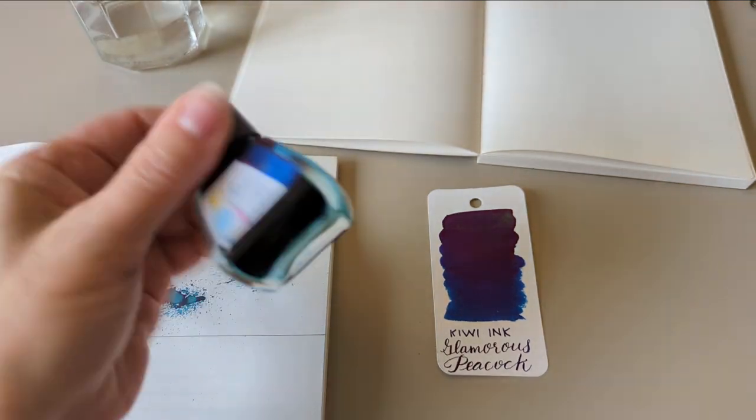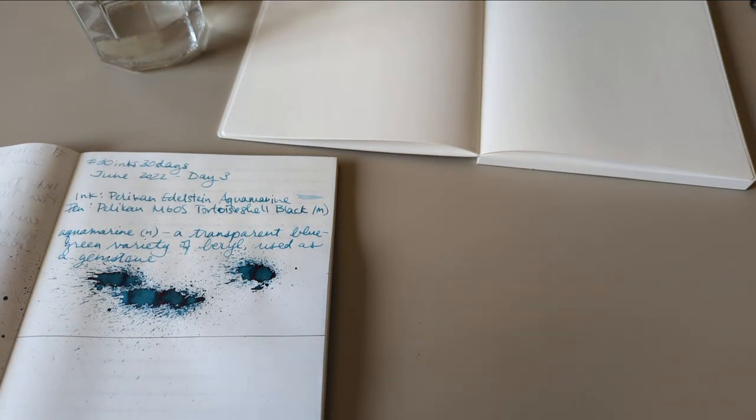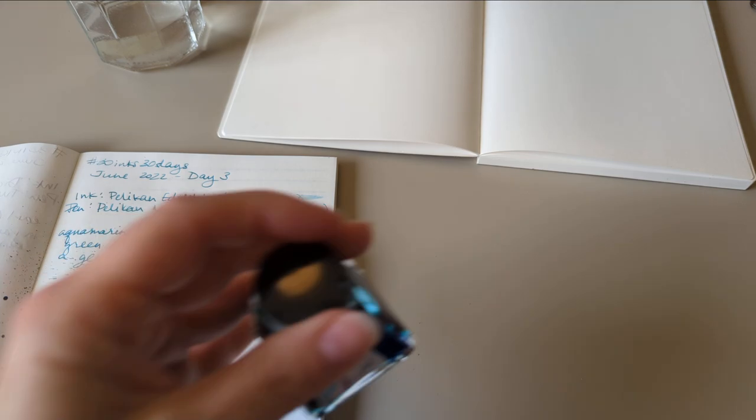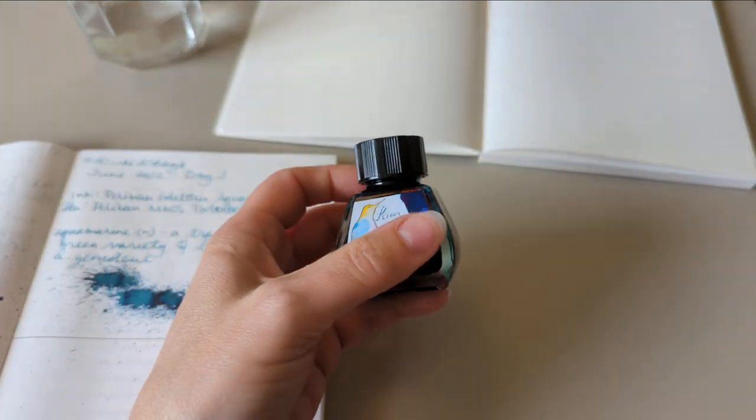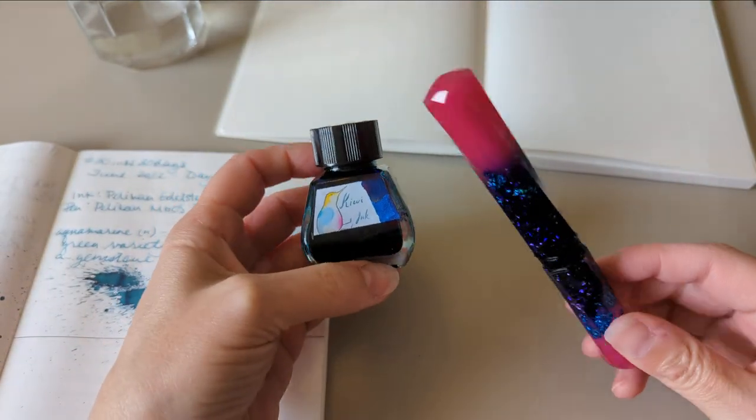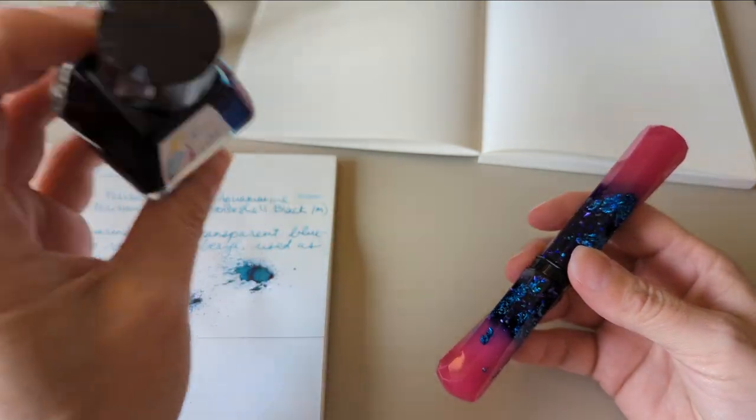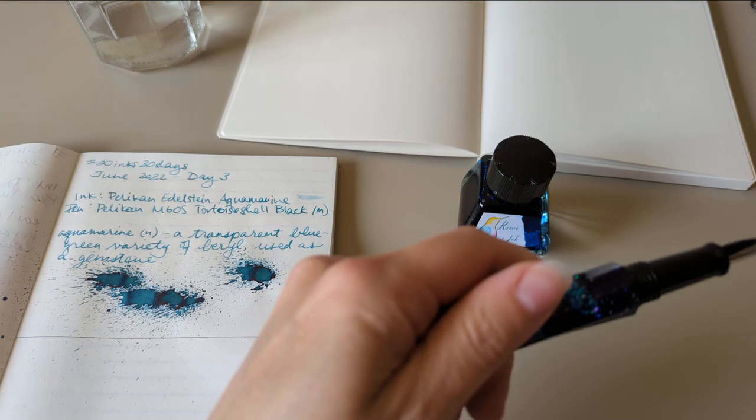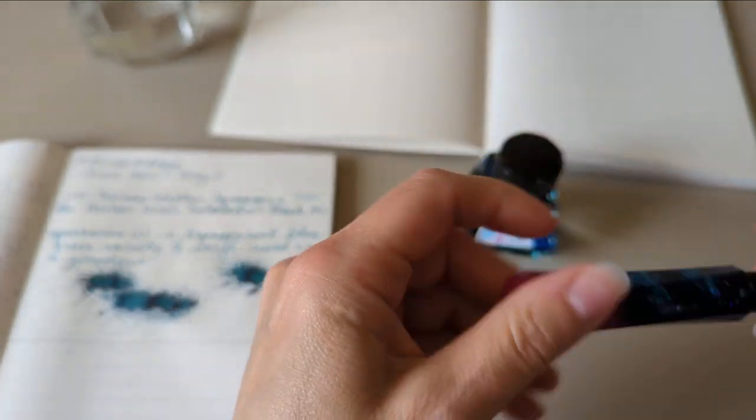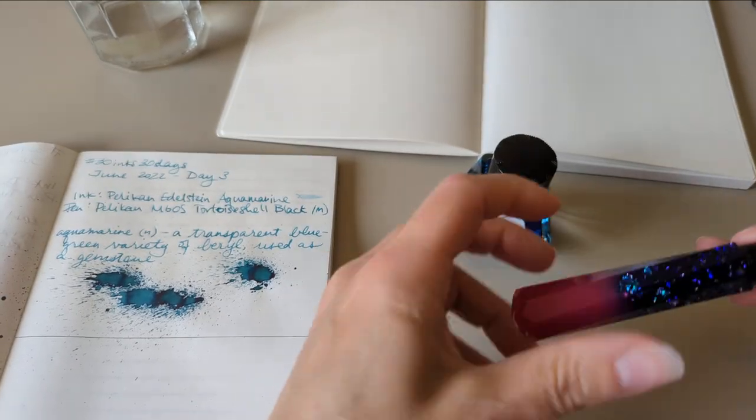And I think that's this one here from Kiwi Ink, and I'm really excited for this. So I thought what pen for it? I should get a glamorous peacock of a pen. So this is the Bennu Grand Scepter and I don't know the color number, it's like 12 or something.